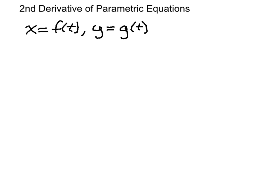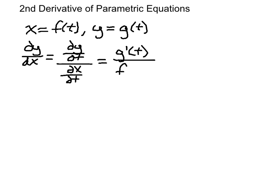Okay, we want to find the second derivative of a set of parametric equations. The first thing we need to do is find dy/dx. So dy/dx is dy/dt divided by dx/dt, which here would be g prime of t divided by f prime of t.